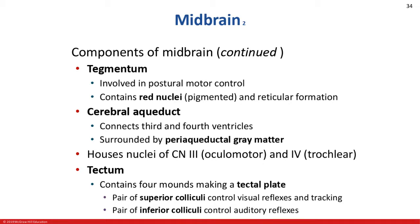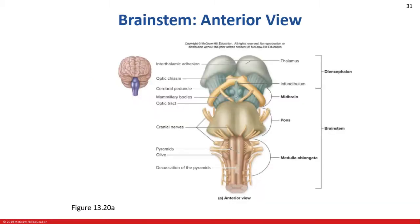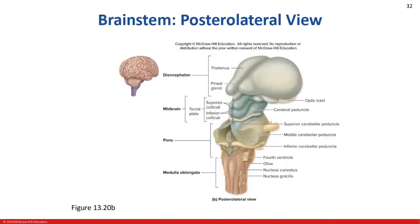Here we can see the cerebral peduncles — the motor tracks. In the midbrain region we can see the substantia nigra. On the posterior portion, the cerebellum sits right on the back of the brainstem, and here is the superior cerebellar peduncle, which connects the midbrain to the cerebellum and provides a connection between those two brain regions.